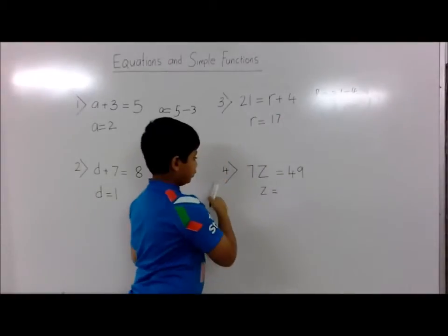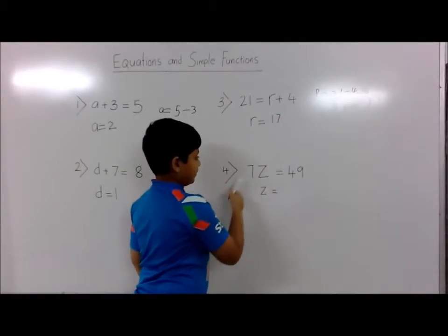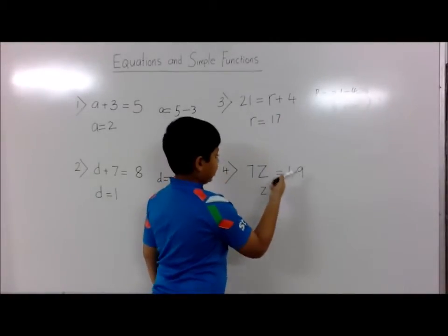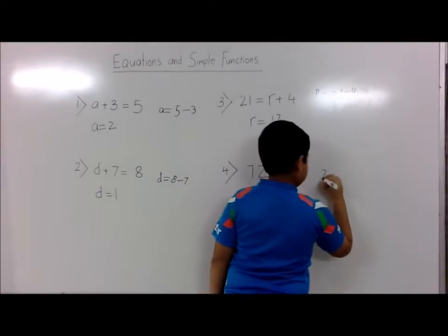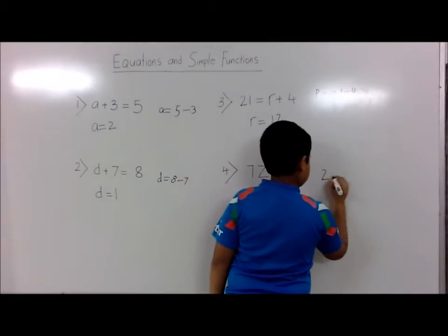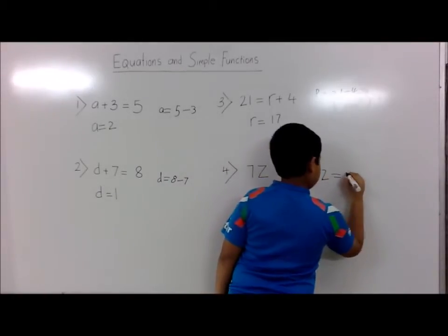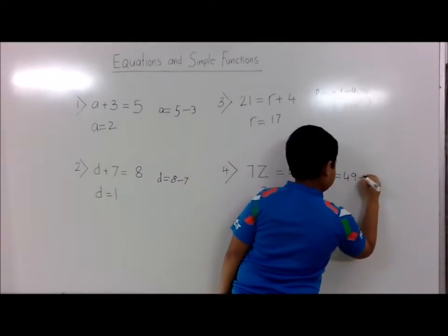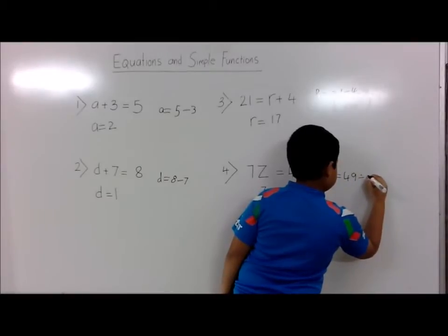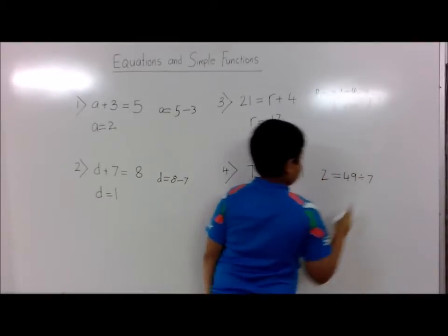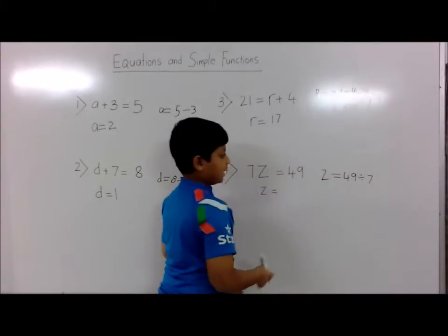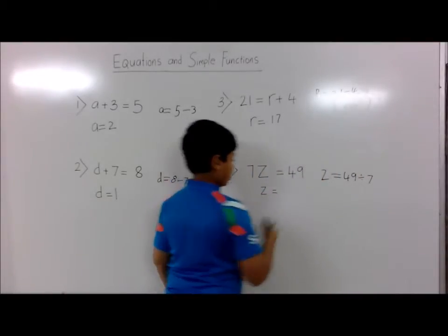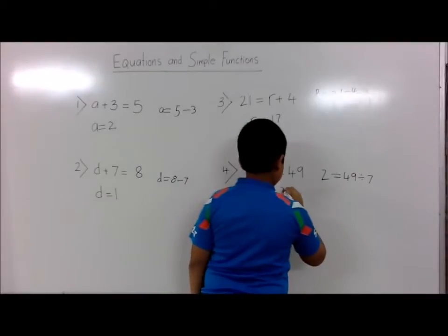Fourth question: 7z is equal to 49. Otherwise, z is equal to 49 divided by 7. 49 divided by 7 is 7, so z is equal to 7.